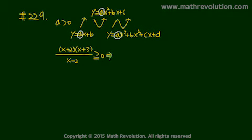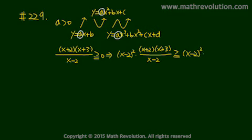If we multiply x minus 2 on both sides, we get x minus 2 squared. And x plus 2 times x plus 3 over x minus 2. The direction of the inequality sign will remain the same because they are of positive values.